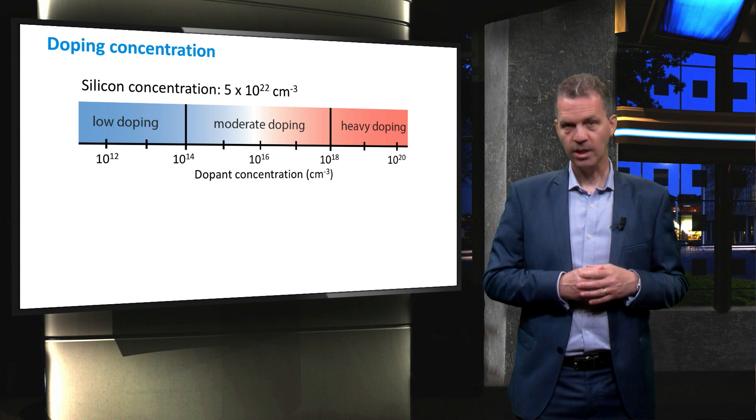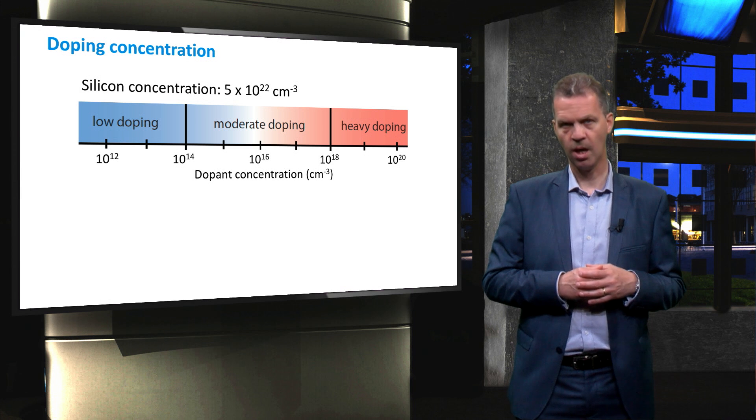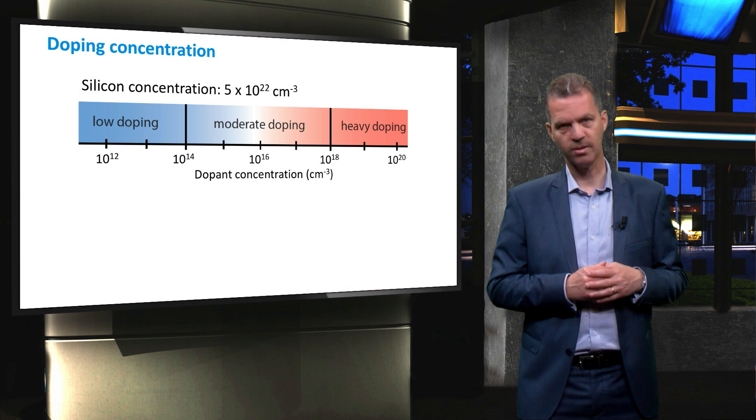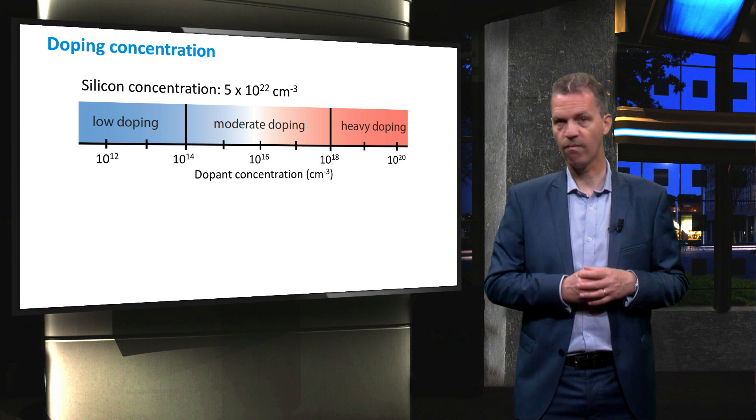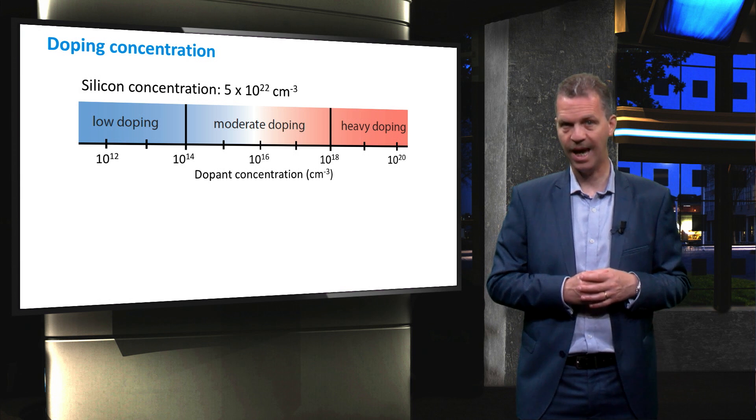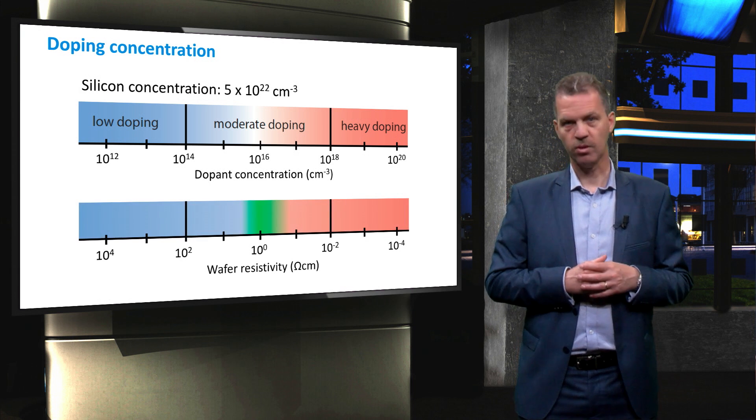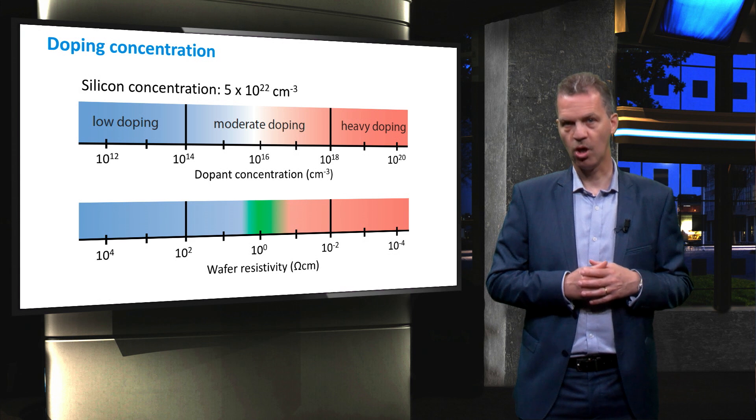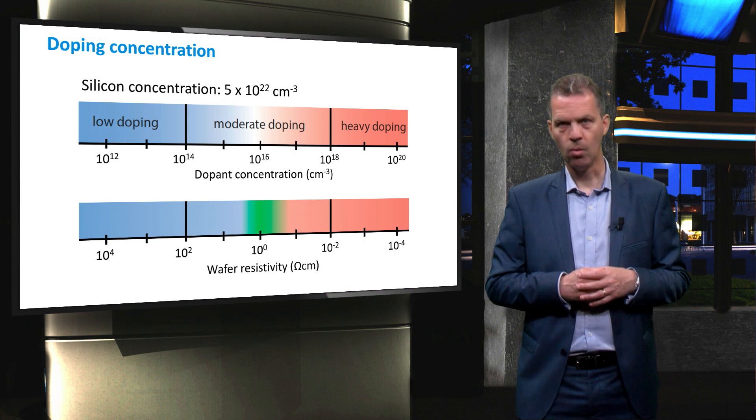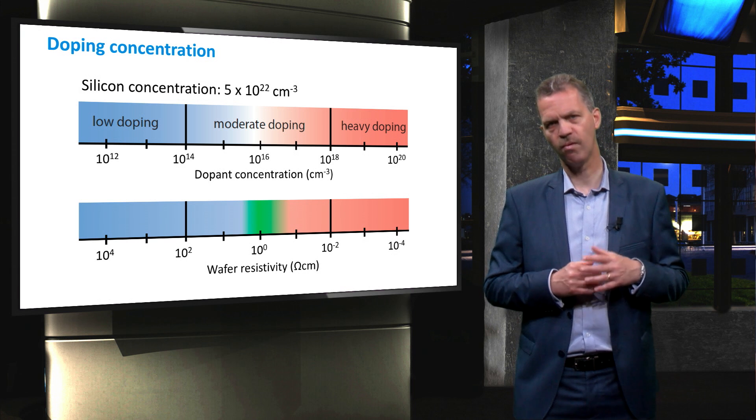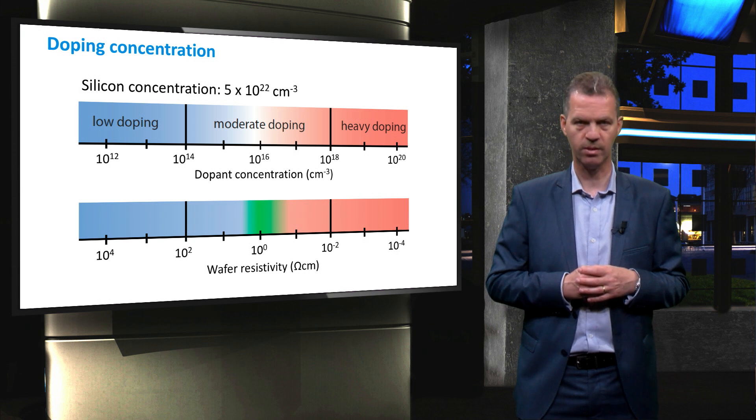The concentration of doping atoms ranges from 1 in a billion silicon atoms for light doping, up to 1 in 10,000 silicon atoms for heavy doping. The latter implies a doping concentration of 5 times 10 to the power 18 dopant atoms per cubic centimeter. Standard crystalline silicon wafers are often doped with a concentration of about 1 times 10 to the power 16, which results in a resistivity of about 1 to 2 ohms centimeter for both p- and n-type wafers.